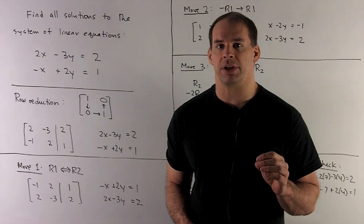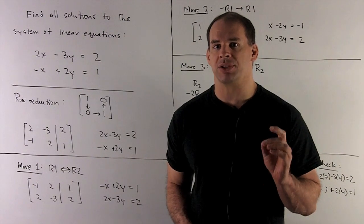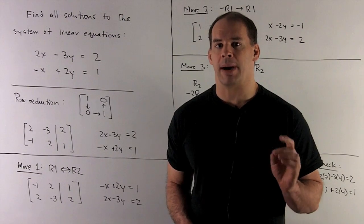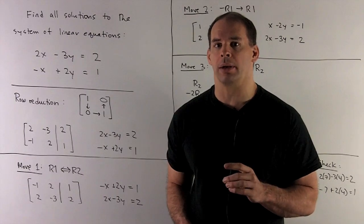Find all solutions to the system of linear equations: 2x minus 3y equals 2, minus x plus 2y equals 1.